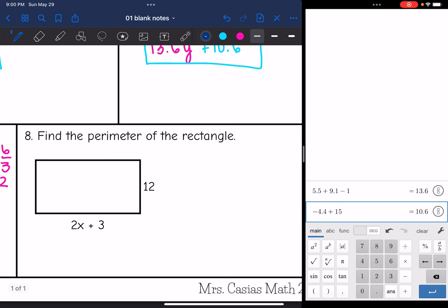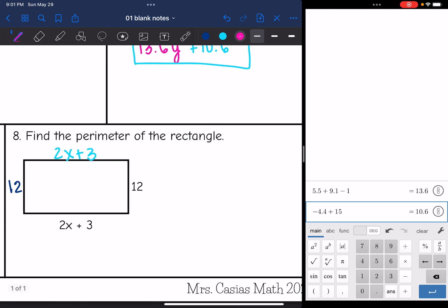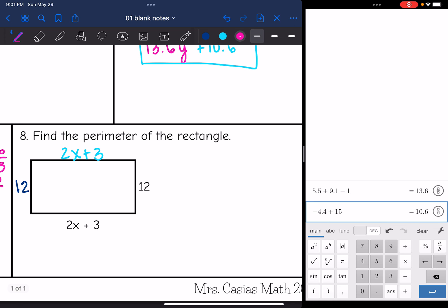All right, last one, it wants us to find the perimeter of the rectangle. Remember, opposite sides are congruent. So that side would be 12. And then the side across from this one would also be 2X plus 3. So now I'm just going to write a long expression representing the perimeter. I'm going to add the four sides together. The 2X plus 3 plus 12 plus 2X plus 3 plus 12.